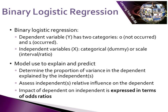Binary logistic regression models can be used, as with any type of regression, to both explain and predict. They can be used to determine the proportion of the variance in the dependent variable that is explained by the independent variables, and to assess the independent variables' relative influence on the dependent. The impact of the independent variables on the dependent is expressed in terms of what we call odds ratios.